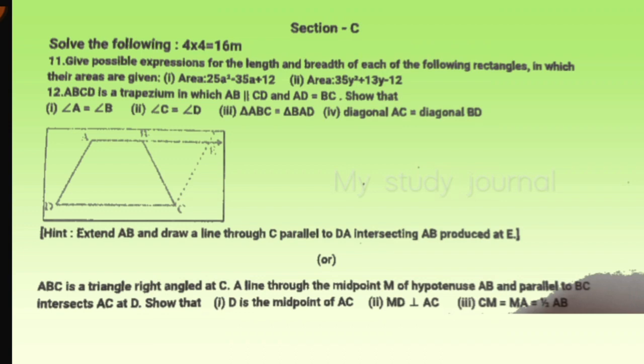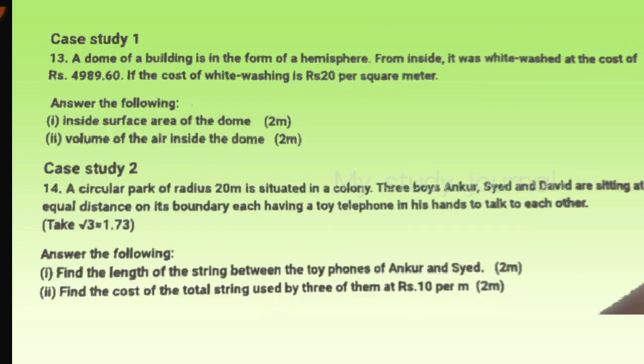Then we have an internal choice given for this which is: ABCD is a triangle right angled at C. A line through the midpoint M of hypotenuse AB and parallel to BC intersects AC at D so that D is the midpoint of AC. Show that MD is perpendicular to AC, CM is equal to AM is equal to half AB. This is a very easy sum for me, so I took the second option.